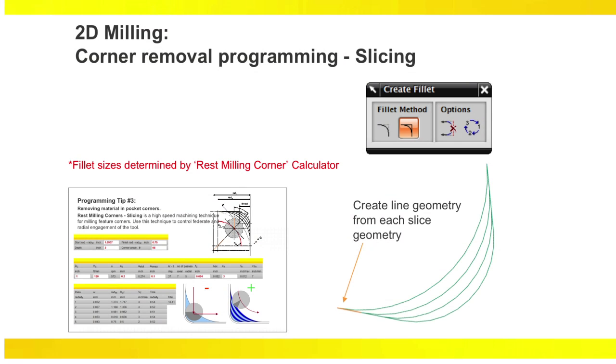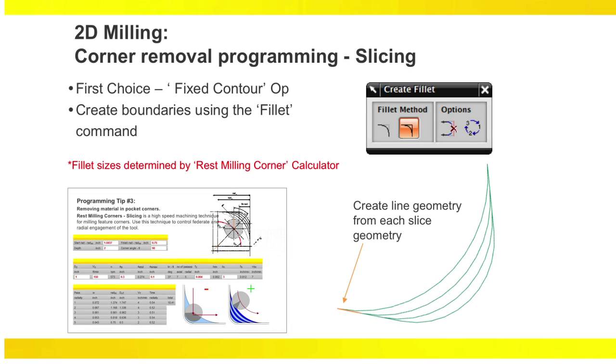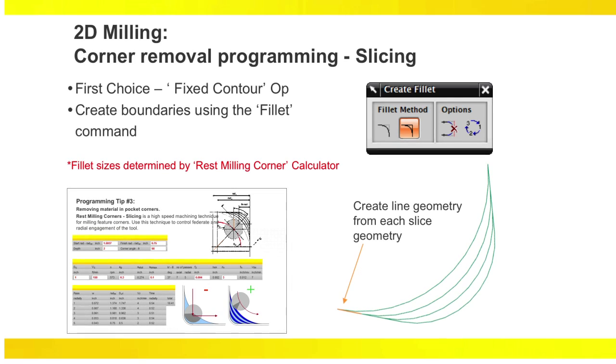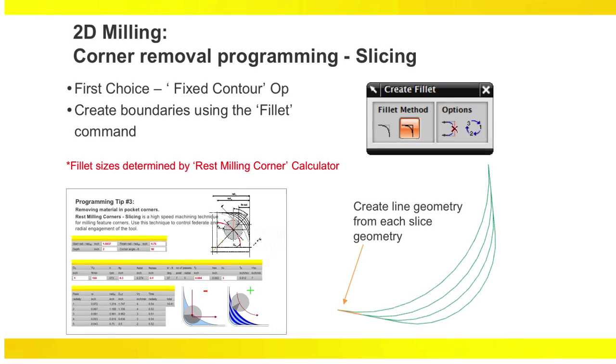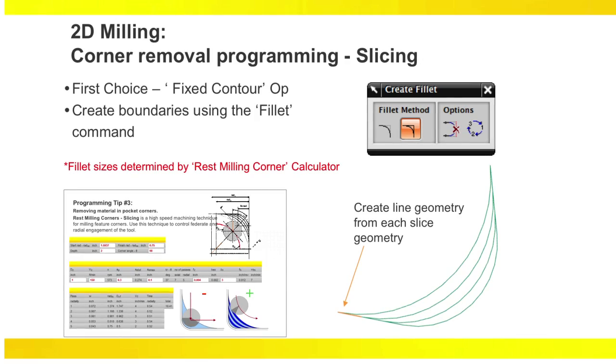To CAM program this technique in Siemens NX CAM software, use the fixed contour operation along with geometry lines used as boundaries. In modeling mode, first create a sketch over the corner to be machined. Create boundaries using the fillet command.